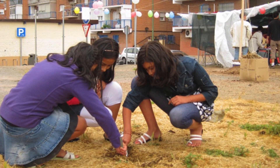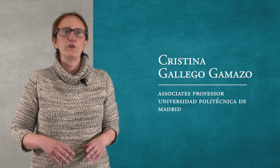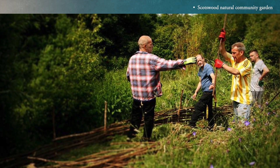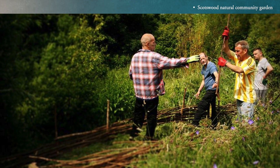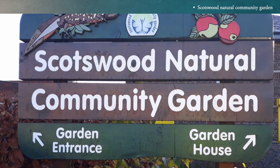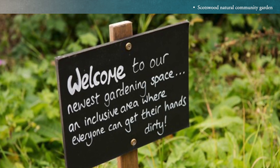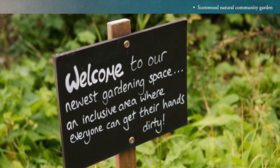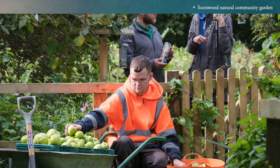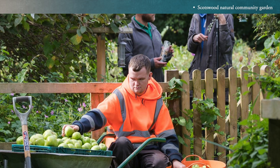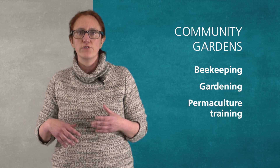My colleague Cristina Gallego will now present examples of some community garden projects. An example is the Scotswood Natural Garden, promoted by a charity that aims to promote learning about nature, the environment and sustainable living. It is conceived as a place where the community and wildlife meet. The site comprises two and a half acres, with a combination of organic garden containing ponds, meadows, woodlands, sensory gardens, orchards, sculptures and artistic elements. Organic fruit and vegetables are grown in plots. This space is open to voluntary community activities, offering activities such as beekeeping for school programs, gardening for dementia, and permaculture training sessions.